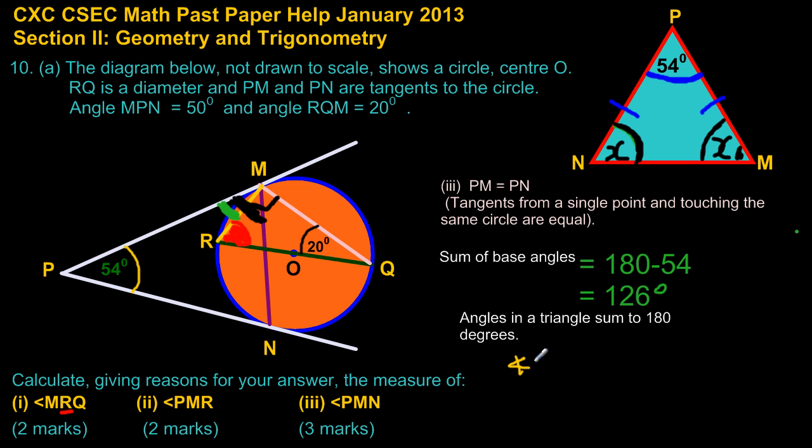PMN is equal to the sum of the base angles, because remember this is the total. Since they are equal, the two base angles are equal, we're just simply going to be dividing this by 2. Two into twelve goes six times, two into six goes three times, so our answer is 63 degrees. And remember that's another geometric concept.